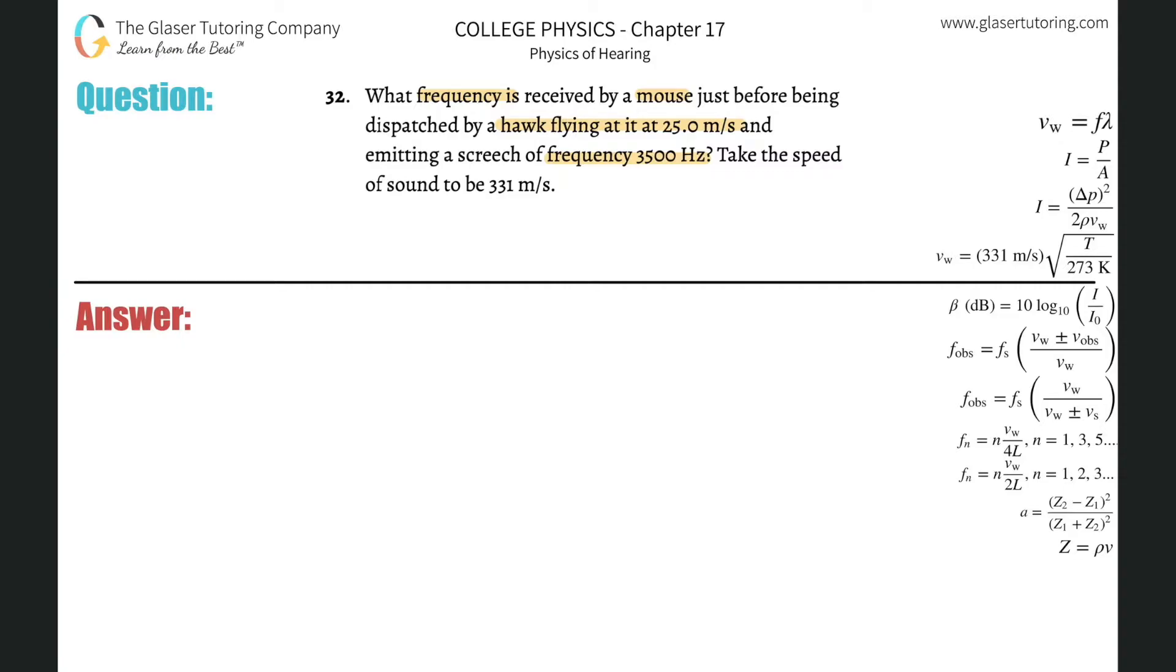We have two formulas: we have SCHMO (S-S-M-O) and we have SOMS (S-O-M-S). SCHMO stands for stationary source, moving observer, and SOMS is stationary observer, moving source. In this problem, the observer, the mouse, is stationary, and the source, the hawk, is moving at a velocity and emitting the frequency. So we're going to use the SOMS equation, and the way to remember that is SOMS and the bomb bombs, so the SOMS equation has the sign on the bottom.